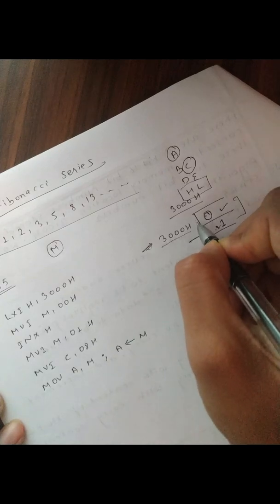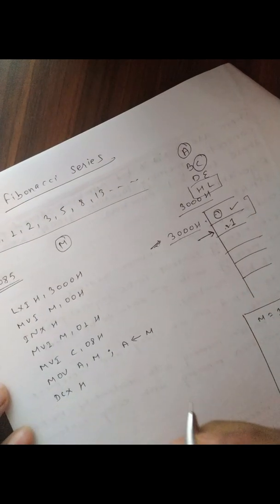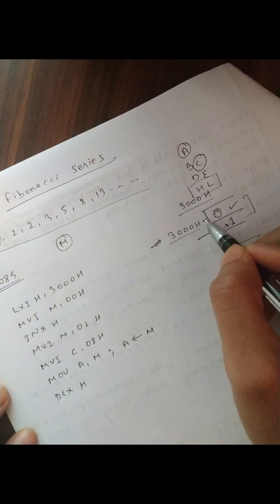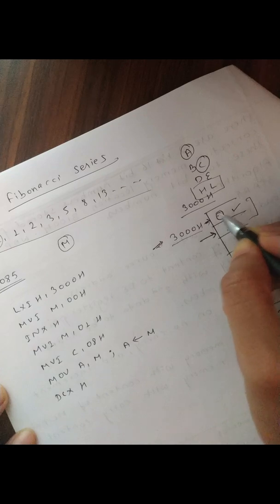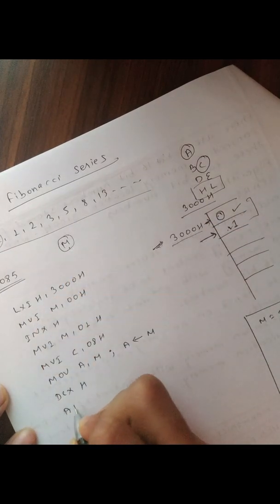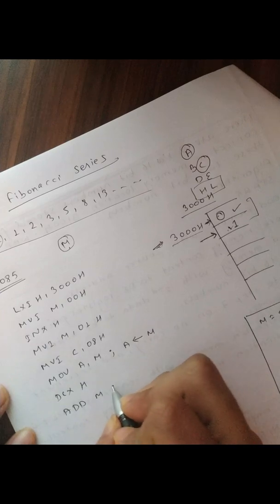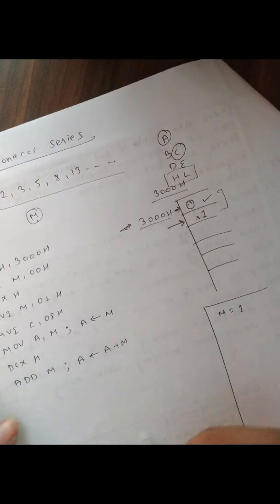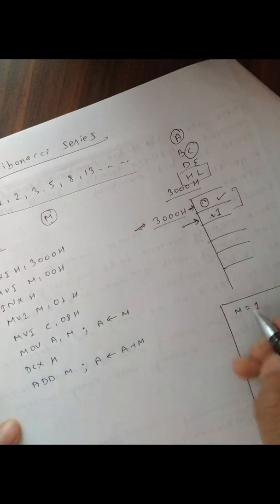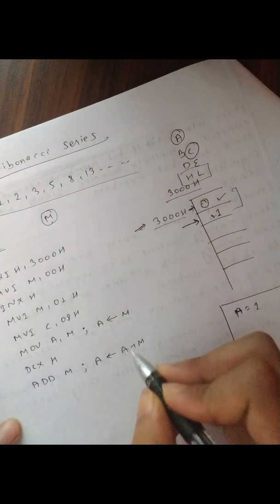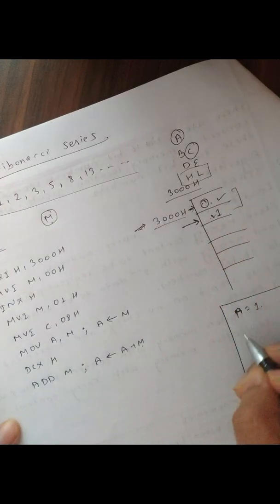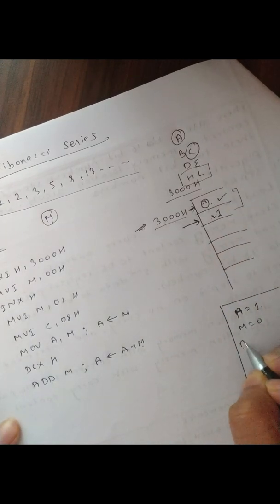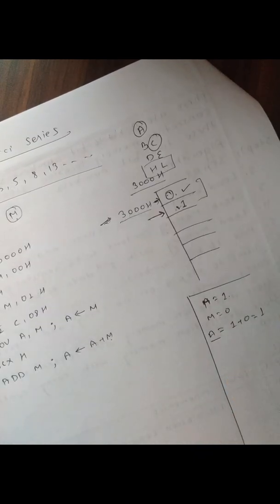Now we need to add these two numbers. We decrement the memory pointer using DCX H to reach the previous location. Then we use the instruction ADD M, which performs A plus M — that is, the accumulator value plus the value at the HL memory location. So A equals 1 plus 0, which gives 1. The sum is now in the A register.